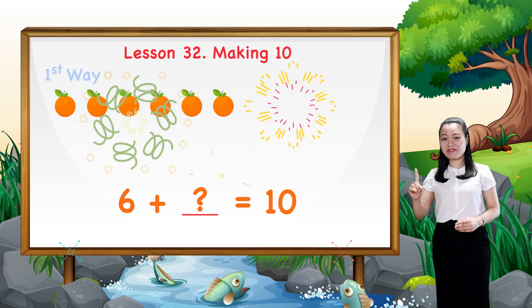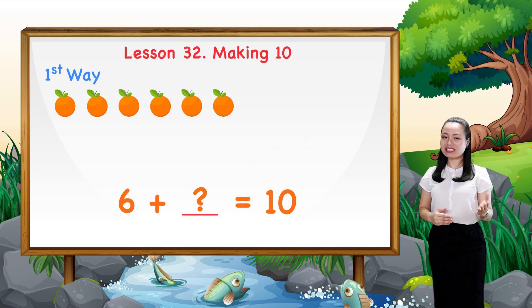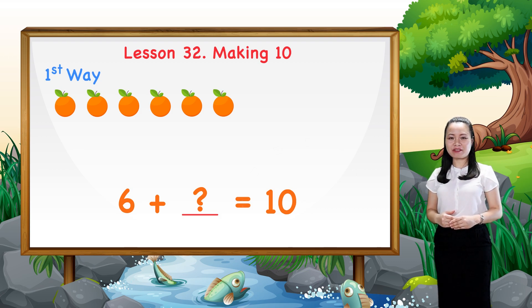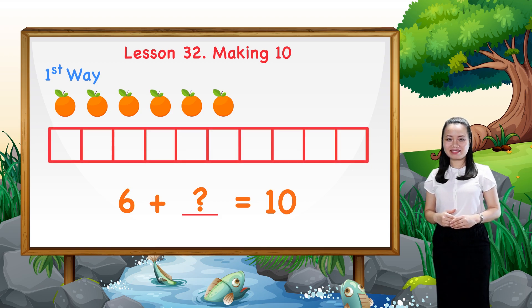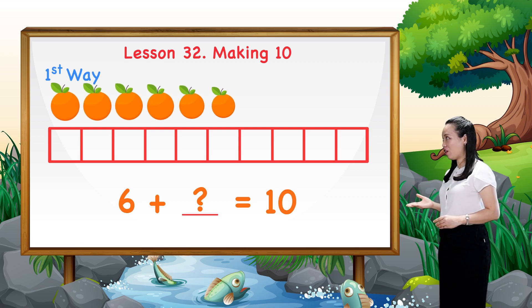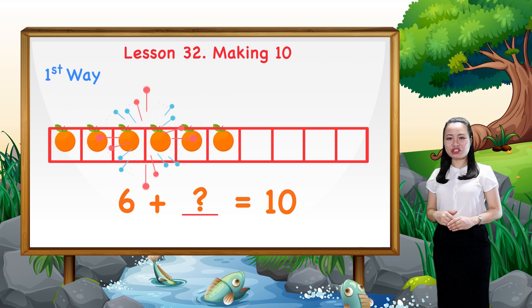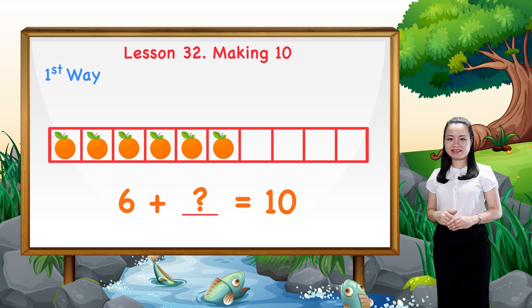The first way is, imagine we have ten empty boxes. Then, we put the six oranges into six boxes. And you see, four boxes are still empty.